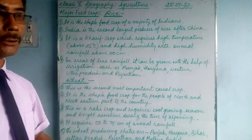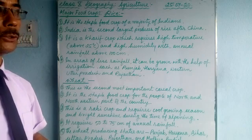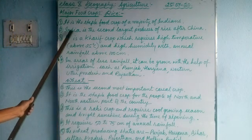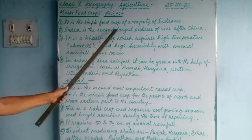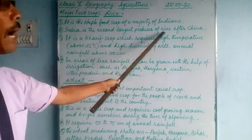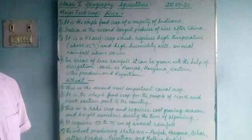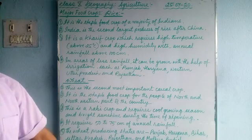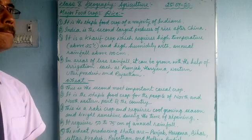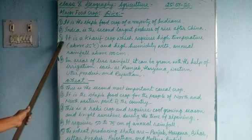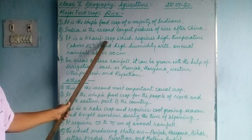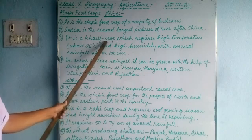Wherever rice is grown, people in those areas eat more rice. Number two — India is the second largest producer of rice after China. We have talked about this in our previous class. Number three — it is a Kharif crop, grown during the rainy season because it requires a lot of water.